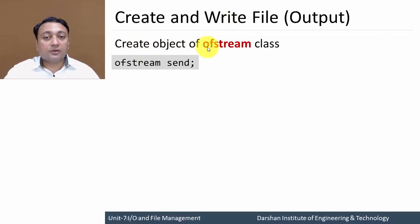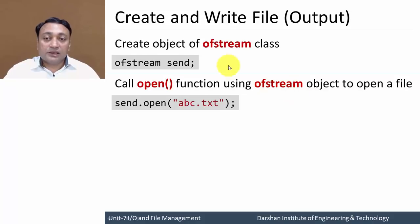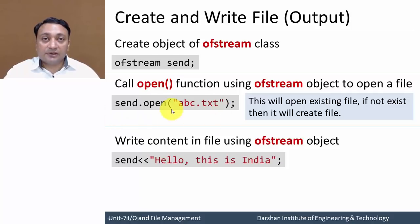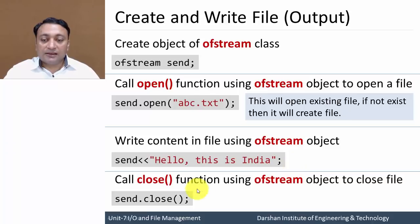Let us discuss creating and writing to a file. First, create an object of the ofstream class — here the object is created by writing the class name ofstream and the object name 'send'. Next, call the open function using the ofstream object: send.open(), providing the file name. The open function will open an existing file, or if it does not exist, create a new file with that name. Then write data using the object: send with the insertion operator to insert a string into that file. Finally close the file by calling send.close().